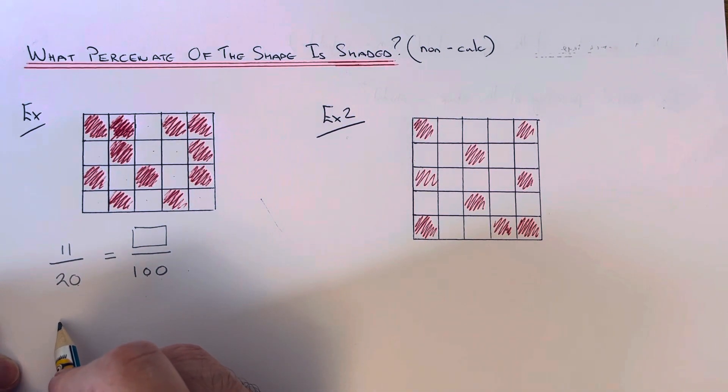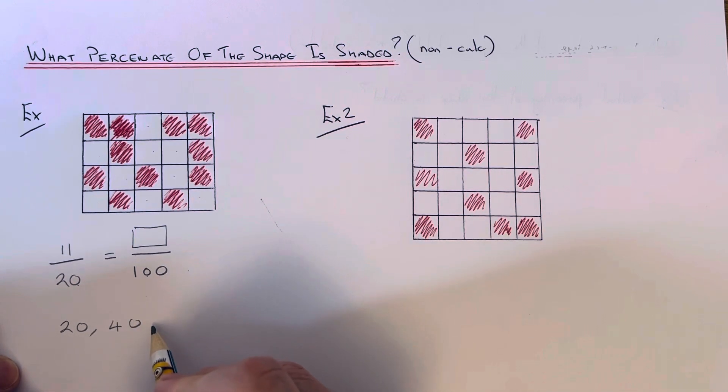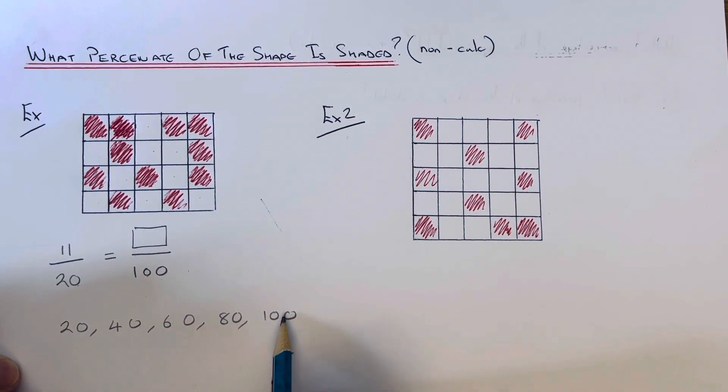So if you don't know your 20 times table, just write them down on your page. You've got 20, 40, 60, 80, 100. So this goes 1, 2, 3, 4, 5.